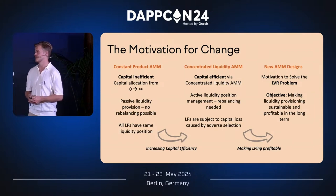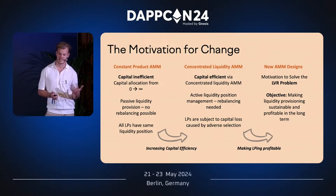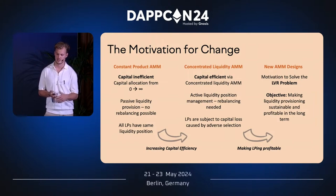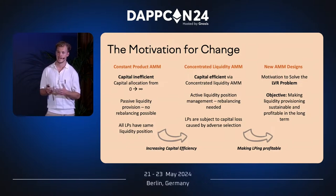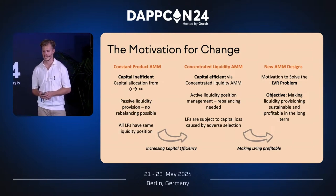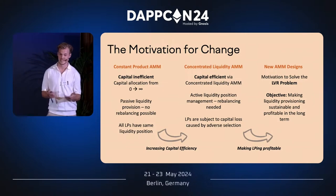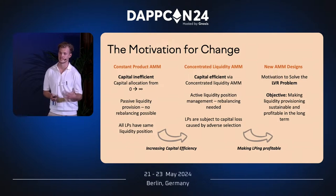Resuming the motivation for change: we're moving from the constant product AMM with inefficient capital allocation toward greater capital efficiency. The move to concentrated liquidity gives LPs active liquidity and non-fungible positions — each LP has their own specified position — whereas in a constant product AMM all LPs share the same position. Many new AMM designs have emerged recently, including CoW Swap and others. I want to spend the rest of the talk explaining why HOT — the Hybrid Order Type AMM — is a solution.